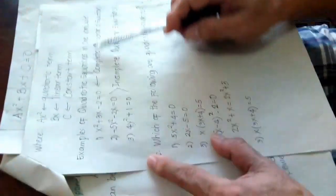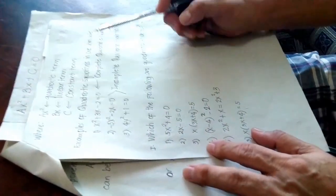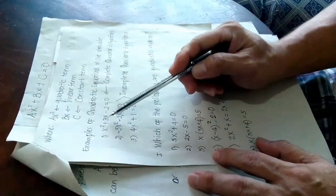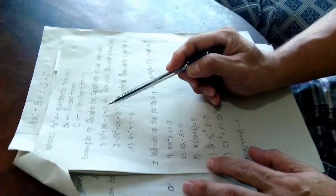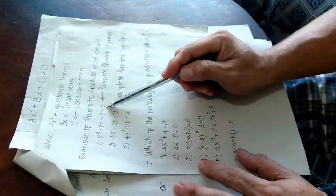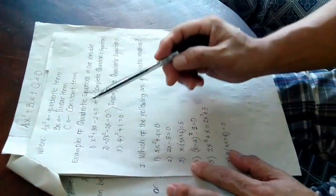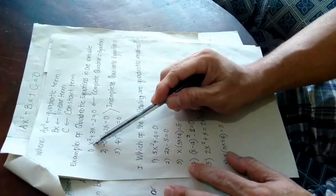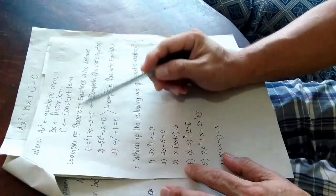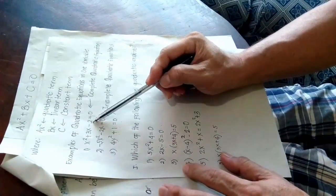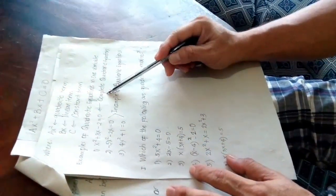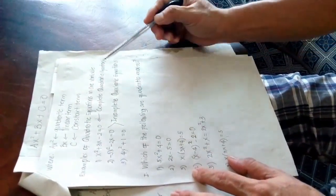Examples of quadratic equations in one variable. Number one: x squared plus 3x minus 2 equals 0. This equation consists of three terms — the quadratic term, the linear term, and the constant term. This equation is known as a complete quadratic equation.